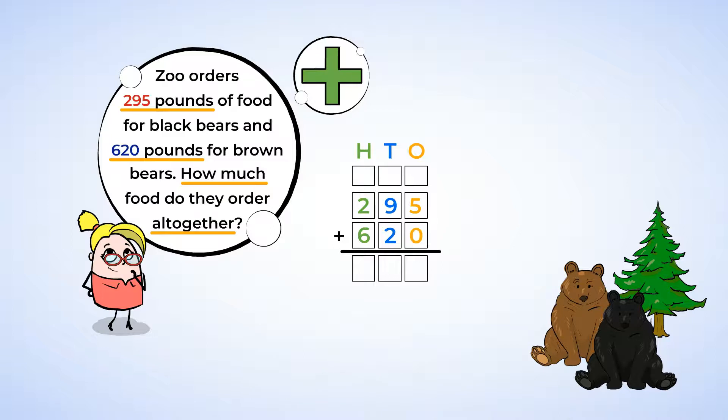Now we can add, starting with the ones. Five plus zero is still five, so put a five in the ones place. In the tens place, we are adding nine and two. This equals eleven. Eleven tens is too big to put in the tens place by itself. We need to regroup by taking ten of those tens and turning them into one hundred.